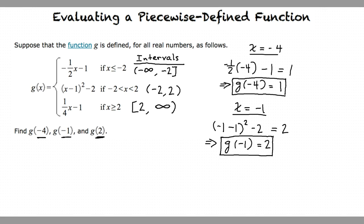Lastly, we will find g of 2. Which domain does 2 fit into? It fits into the last domain because 2 is included in that one. That's right. So we will substitute 2 into the last part of the equation. 1 fourth times 2 minus 1 equals negative 1 half. So g of 2 equals negative 1 half.